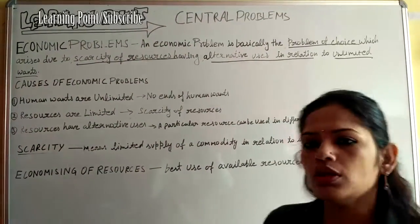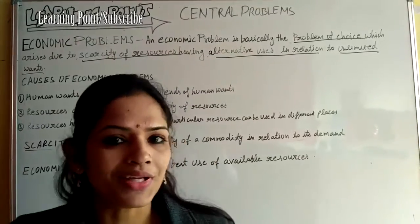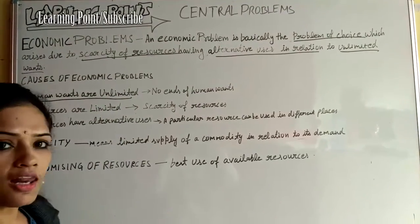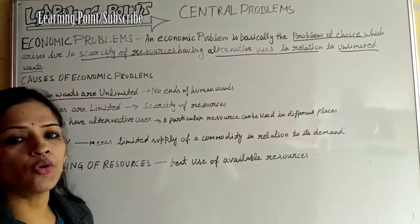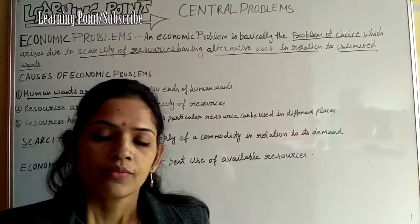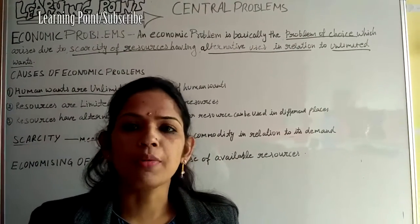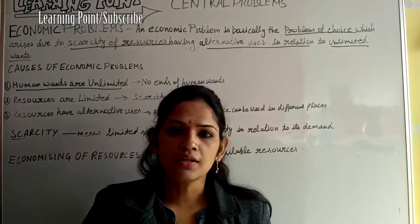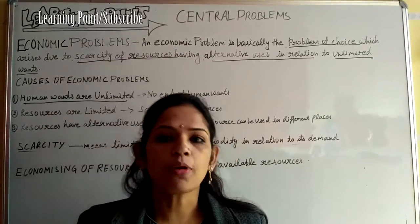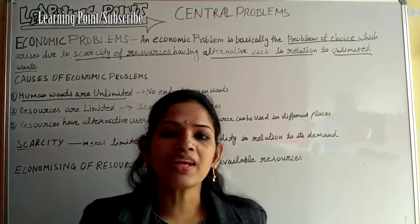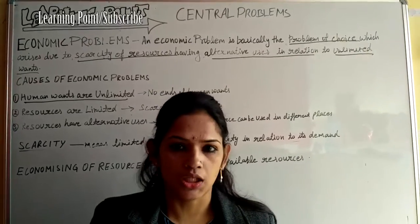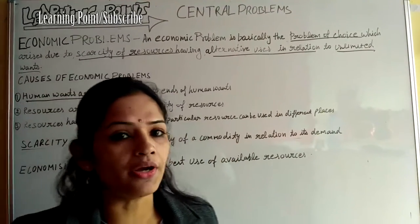If you look at this definition, we can take the causes of economic problems. The first cause is that human wants are unlimited — there is no end to human wants. For example, we want a cell phone, then a scooter, then a bike. Our human nature is that one want leads to another. So our wants are unlimited; there is no end.